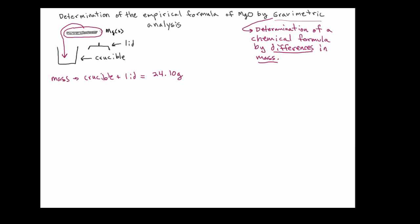But we'll add the magnesium to the crucible and then we're going to mass again, only this time we're going to have the mass of the crucible, the lid and the magnesium metal together. This is where this idea of differences in mass comes into play. So now my new mass with all three items is 24.23 grams.